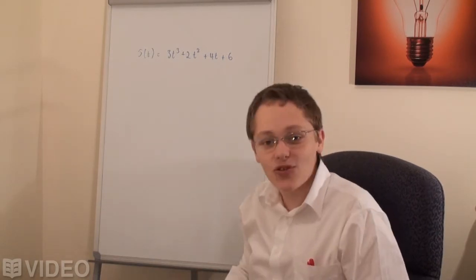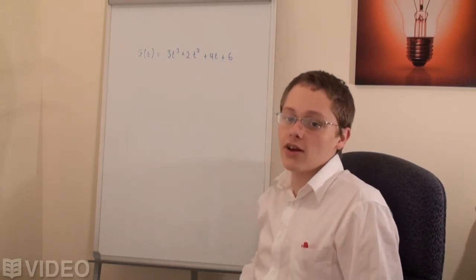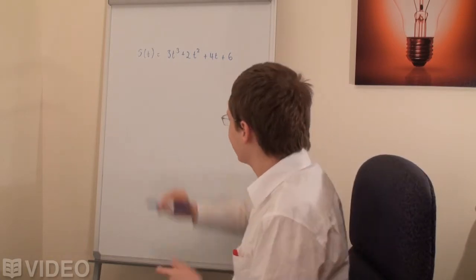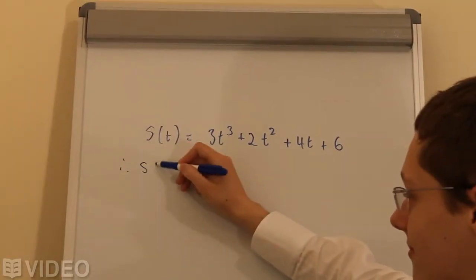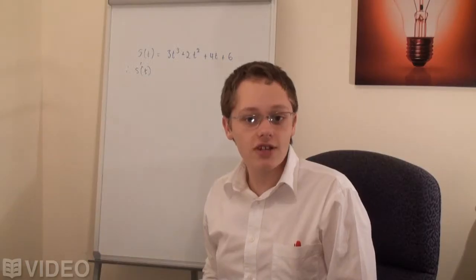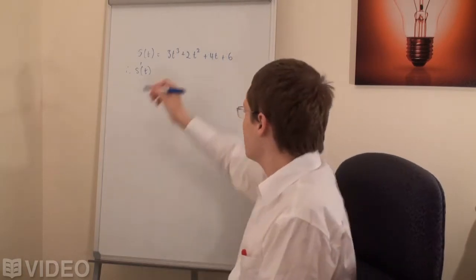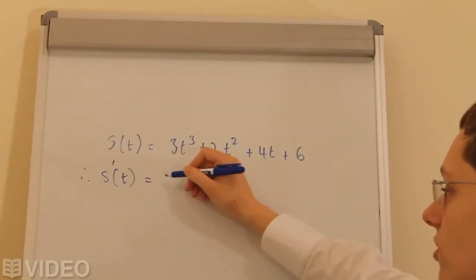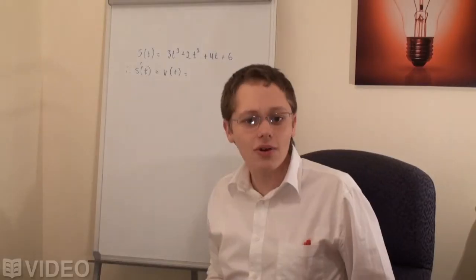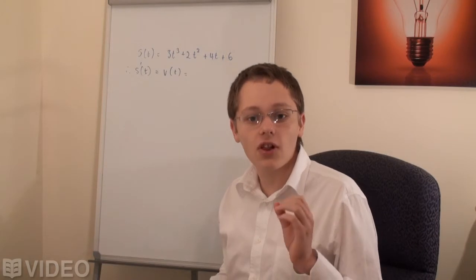We just need to differentiate using the sum and power rule that we learnt quite a while back — hopefully you remember. So s′(t), the first derivative of our displacement-time function, is equal to the velocity-time function. This means that the slope of a displacement-time function is actually the velocity.